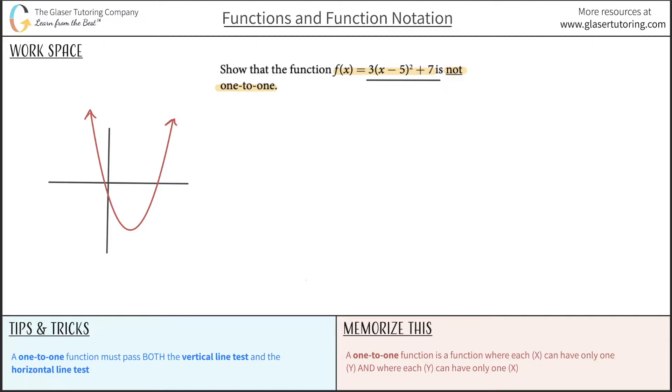Now, in order to be a one-to-one function, what we're going to do is test to see whether it is a one-to-one function. And if it isn't, then we just showed that it's not. So remember that the idea behind a one-to-one function, it says a one-to-one function is a function where each x can have only one y and where each y can have only one x.